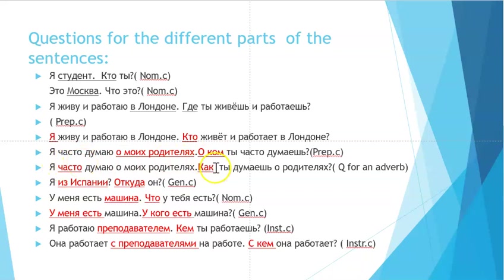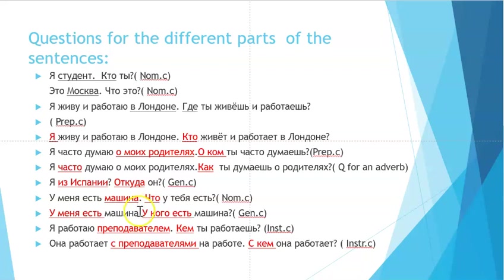If you want to put a question to the adverb 'часто' (often), you use 'как' or 'как часто ты думаешь о родителях?' For 'я из Испании' (I'm from Spain), the genitive case question is 'откуда' — 'откуда он?' or 'откуда ты?' — meaning 'where are you from?'